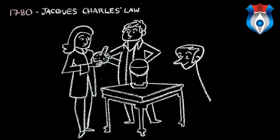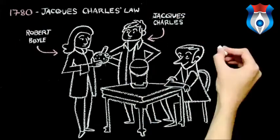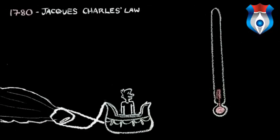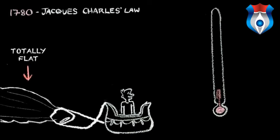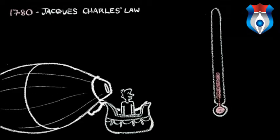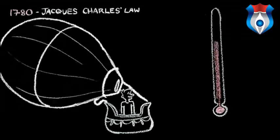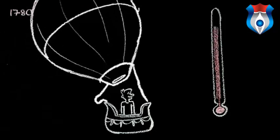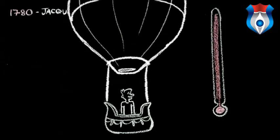In 1780, Jacques Charles noticed a different relationship between gases and their temperature. If you've ever seen a hot air balloon, you've seen this law in action. When the balloons are laid out, they're totally flat. Instead of blowing the balloon up like a party balloon, they use a giant flame to heat the air inside that envelope. As the air is heated up, the balloon begins to inflate as the gas volume increases. The hotter the gas becomes, the larger the volume — and that's Charles' law.